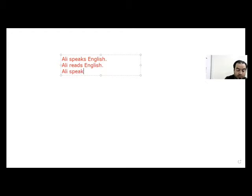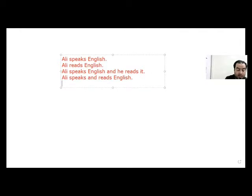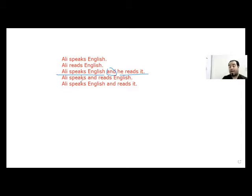So we say 'Ali speaks English, and he reads it.' As you can see, this sentence is longer and it contains both. I can make it shorter by saying 'Ali speaks and reads English,' or 'Ali speaks English and reads it.' So here we use the word 'and' to connect two sentences together. They have to be related. 'And' is used to show similarity — we use 'and' to connect similar things.